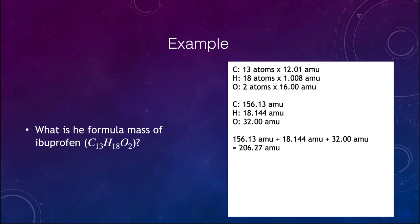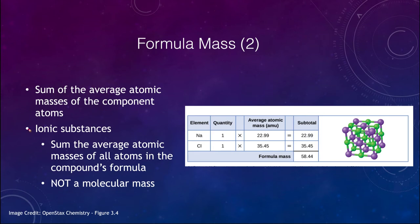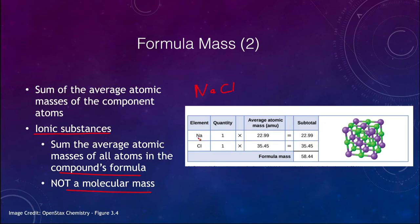It is a little different when we look at ionic substances. Ionic substances form a lattice or crystal structure, so we do not just have a sodium chloride molecule — it is actually an entire lattice structure. Therefore it is not called a molecular mass, but we still use the compound's formula and take the average atomic masses. Sodium chloride, NaCl, has one atom of sodium and one of chlorine; we look up their atomic masses and add them together to get a formula mass of 58.44.